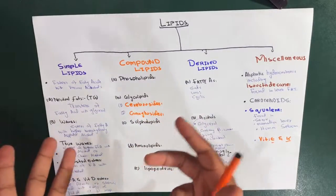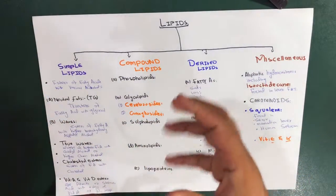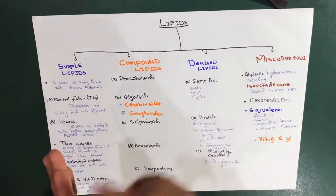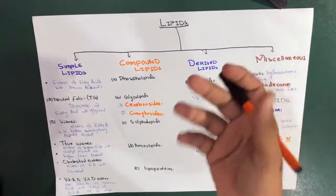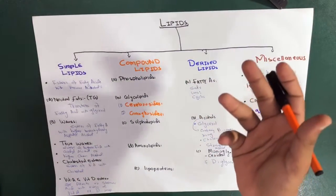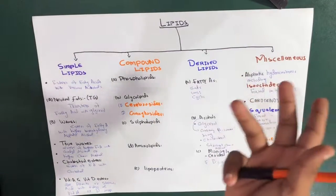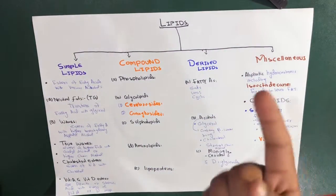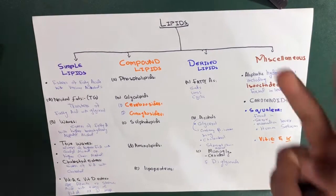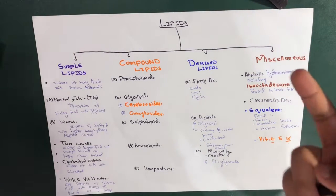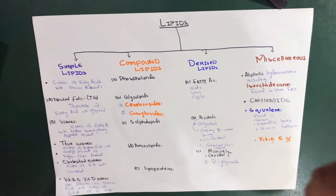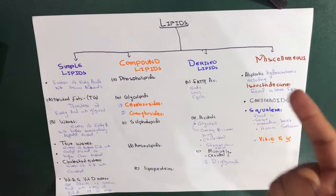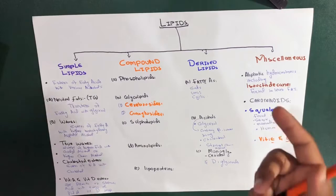Phospholipids are substituted fats containing, in addition to fatty acids and glycerol, a phosphoric acid. They also contain a nitrogenous base. Examples include phosphatidylcholine, phosphatidylethanolamine, phosphatidylserine, and plasmalogens.